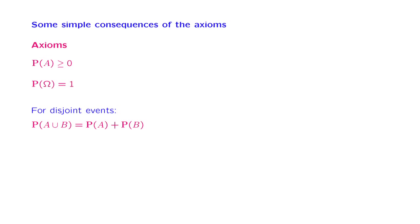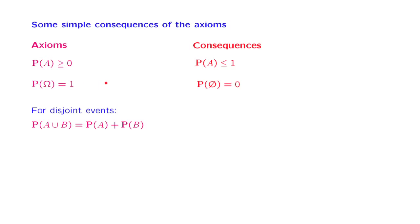For example, we have an axiom that probabilities are non-negative. We will show that probabilities are also less than or equal to 1. We have another axiom that says the probability of the entire sample space is 1, and we will show a counterpart that the probability of the empty set is equal to 0. This makes perfect sense — the empty set has no elements, so it is impossible. There is zero probability that the outcome of the experiment would lie in the empty set.